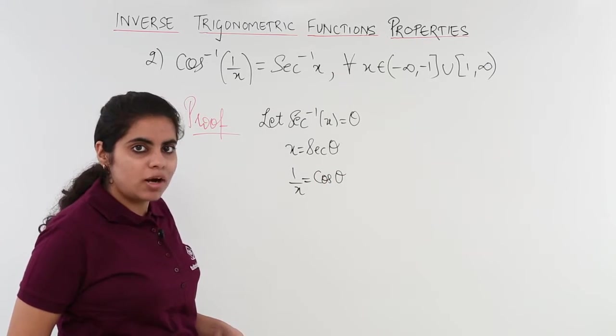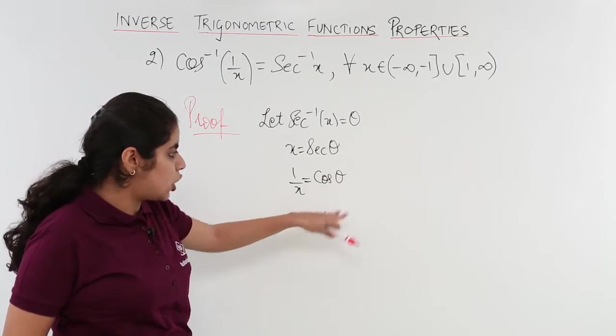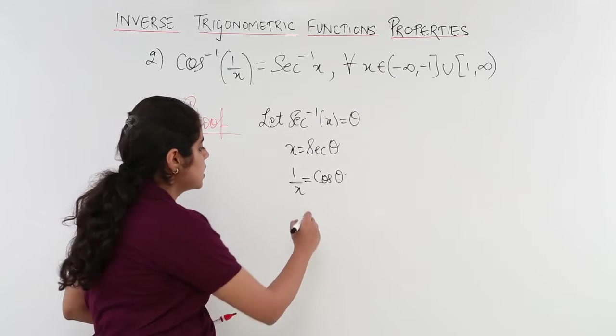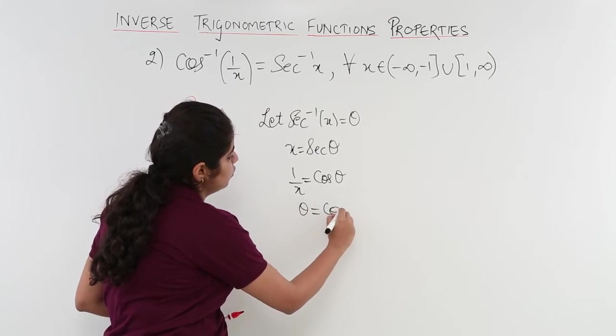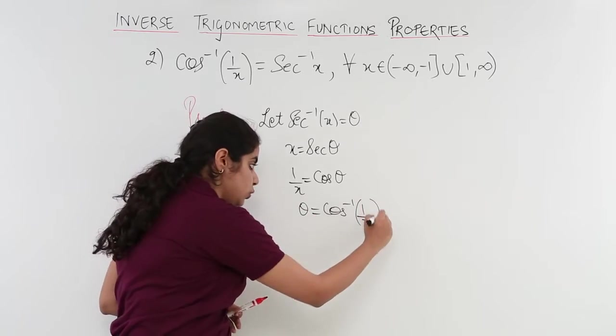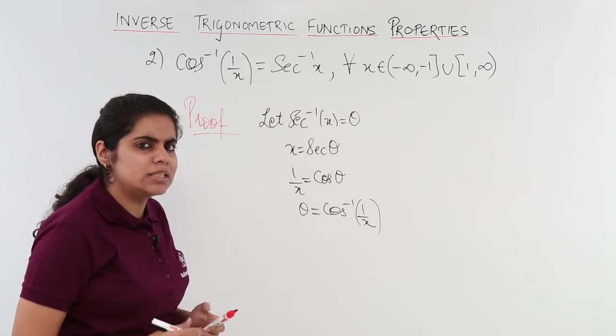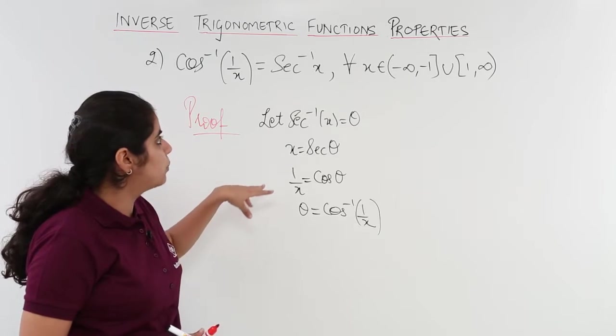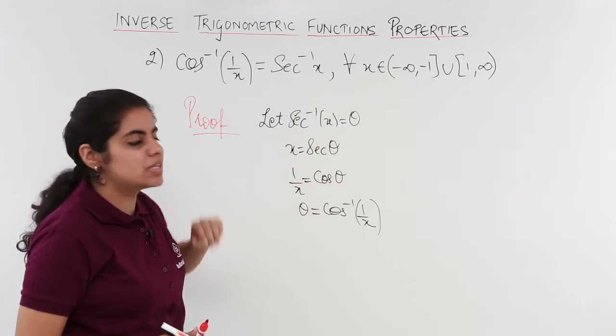From here what is theta? Theta is nothing but cos goes that side it becomes inverse. So theta is equal to cos inverse 1 by x. Now you close this bracket and what was theta? Theta from the question was secant inverse x.